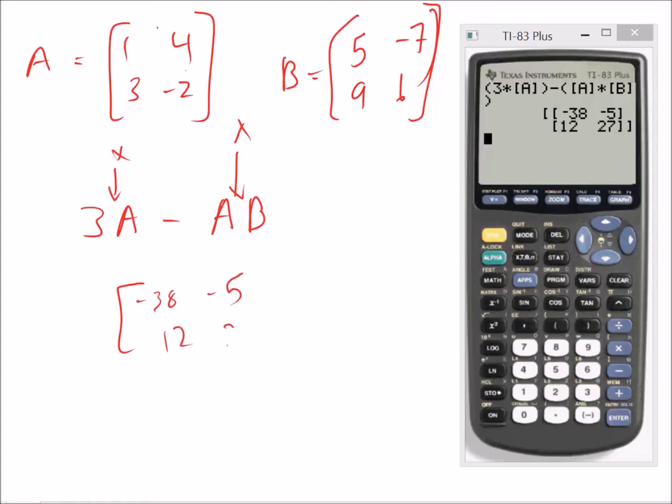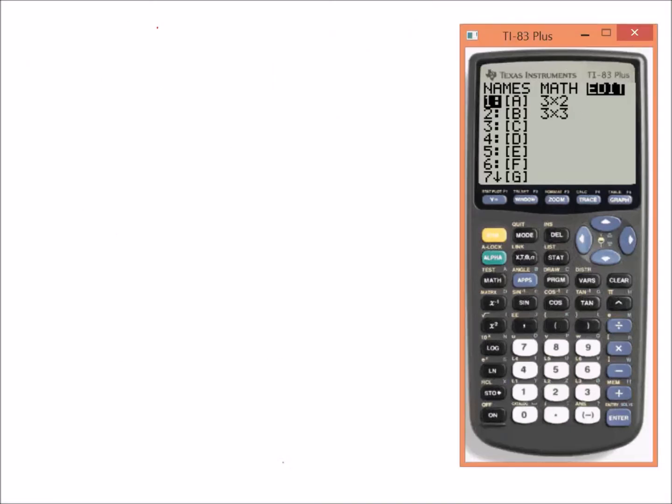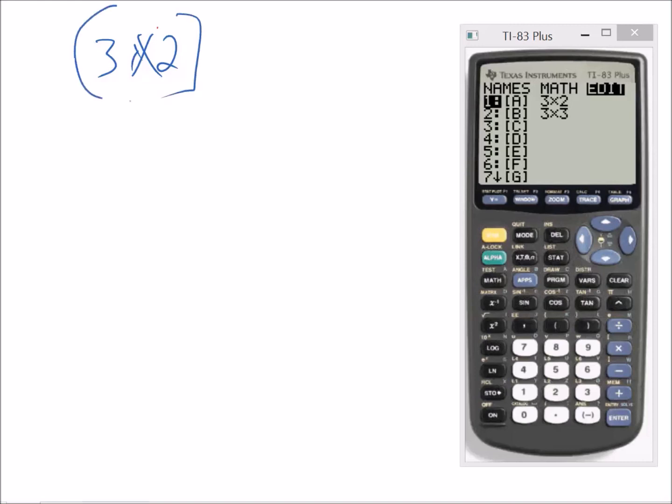So earlier in this video I talked about how for the product of two matrices to be defined, the number of columns in A has to match the number of rows in B. So what happens on a calculator if it's not defined? So let's say we have a matrix like a 3 by 2, and we want to multiply that times a 3 by 3. Well, the number of columns in A does not match the number of rows in B, so this shouldn't work. The answer should be not defined. So let's just make sure that happens on our calculator and let's see what it looks like.